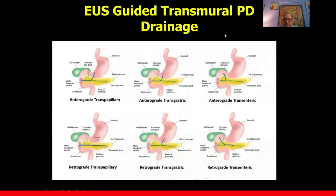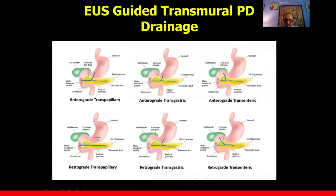Transmural drainage has various subtypes: antegrade trans-papillary drainage where the duct is punctured from the stomach and the stent exits through the papilla with one end in the duodenum and one in the stomach; antegrade where puncture is from the stomach and the stent end remains in the duct; antegrade trans-enteric where puncture is from the duodenum and the stent goes toward the papilla; retrograde trans-papillary from the duodenum with the stent going from adjacent to the papilla into the duct; retrograde transgastric from the stomach with the stent going toward the tail; and retrograde transduodenal with the stent going toward the tail of the pancreas.